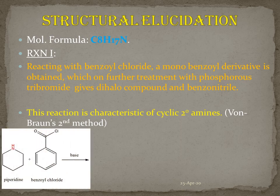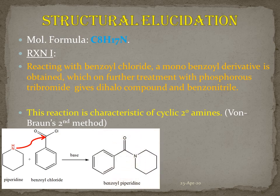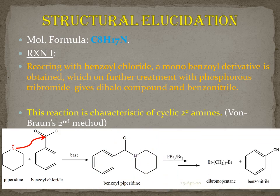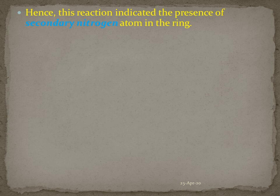Here is one example to explain Von Braun's second method. Piperidine, which is a cyclic secondary amine, is treated with benzoyl chloride. The lone pair on the nitrogen atom attacks the carbonyl carbon of benzoyl chloride and we get benzoyl piperidine — a monobenzoyl derivative — which on further reaction with phosphorus tribromide in the presence of bromine gives a dihalo compound. Since we are using piperidine, we get dibromopentane. The dibromopentane having five carbons shows that the starting material is the cyclic secondary amine piperidine. On the basis of the first reaction, it is concluded that conine must have a secondary nitrogen present in the ring.